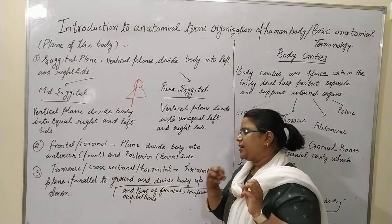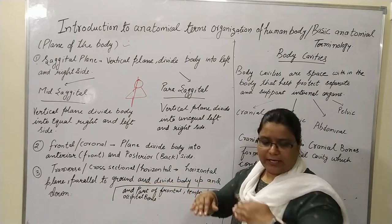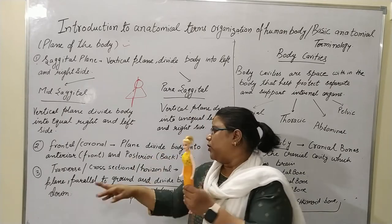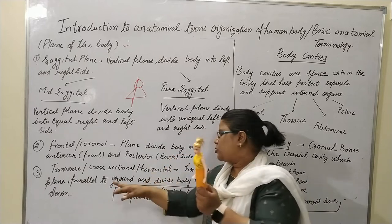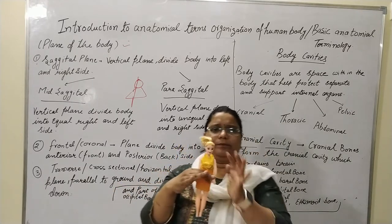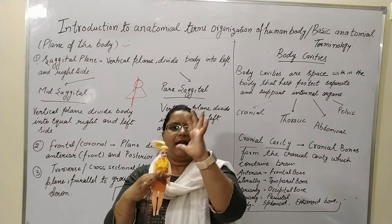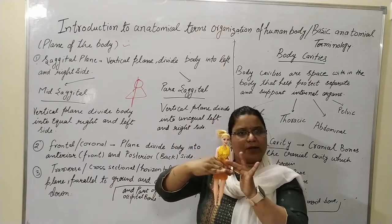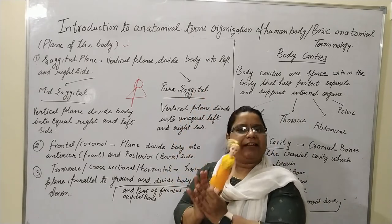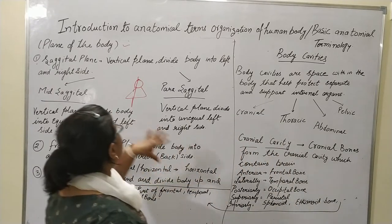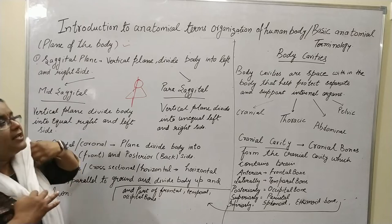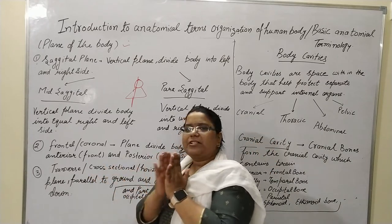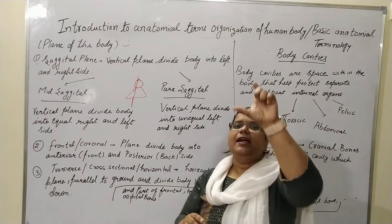The transverse plane is also called the cross-sectional plane or horizontal plane. It is parallel to the ground and it divides the body up and down — into an upper part and a lower part. So to summarize: the sagittal plane divides the body into left and right; the frontal plane divides the body into front and back; and the transverse plane divides the body into upper and lower parts.